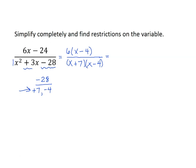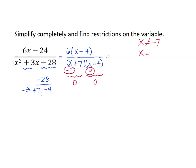For the first binomial: if I plug in negative 7, then negative 7 plus 7 makes that binomial equal zero, giving a zero in the denominator. For the second: if I plug in 4, then x minus 4 equals zero. So my two restrictions are x cannot equal negative 7 and x cannot equal 4.